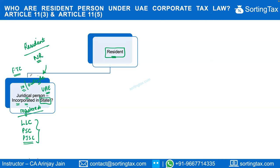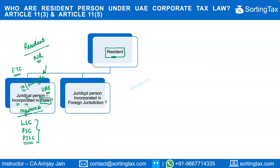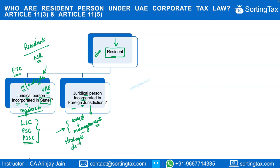The second category is a juridical person incorporated in a foreign jurisdiction that can be considered a UAE resident where the effective control and management of such foreign person is in the UAE. Even a foreign company can be considered a UAE resident where its control and management is in the UAE. To evaluate this, one needs to see where the strategic decisions relating to management are undertaken.